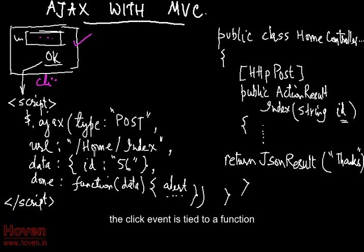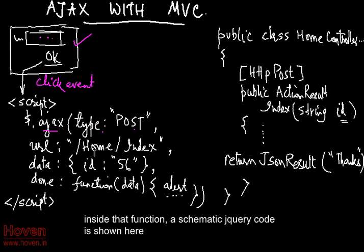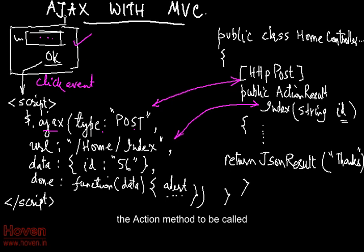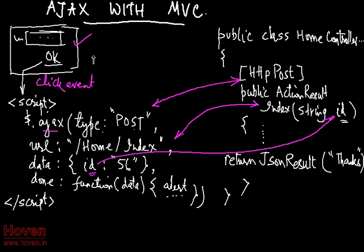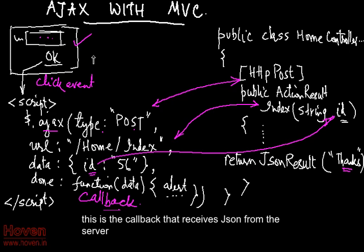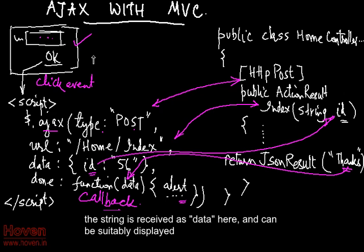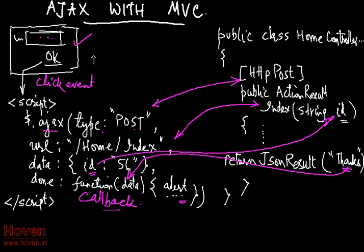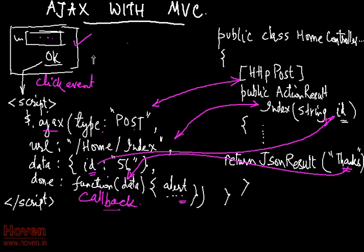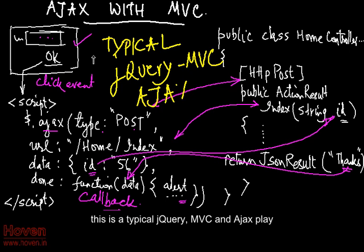The click event is tied to a function. Inside the function, a schematic jQuery code is shown. Post — the action method to be called, data sent for the id parameter. This is the callback that receives JSON from the server. The string is received as data here and can be suitably displayed. Note that the parameter called data must be spelled correctly — it's hard coded. This is a typical jQuery, MVC, and Ajax play.